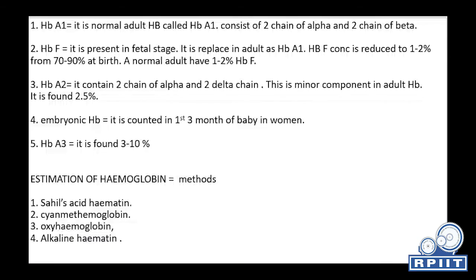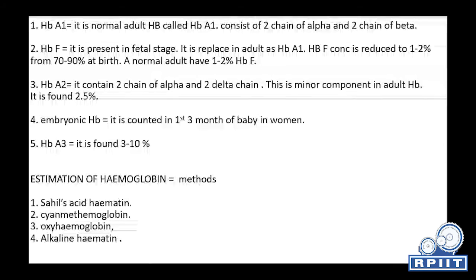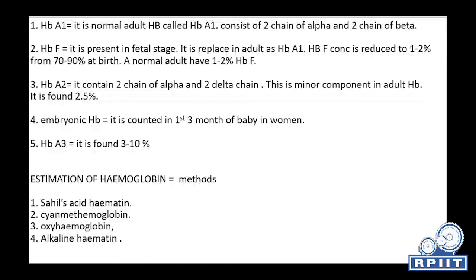Embryonic hemoglobin is present in embryonic life. HbA1 is the normal adult hemoglobin called HbA1. It consists of two alpha chains and two beta chains. HbF, the fetal hemoglobin, is present in the fetal stage. HbA2 contains two alpha chains and two delta chains. It is a minor component of adult hemoglobin, found at about 2.5%. Embryonic hemoglobin is found in the first 3 months of fetal development.